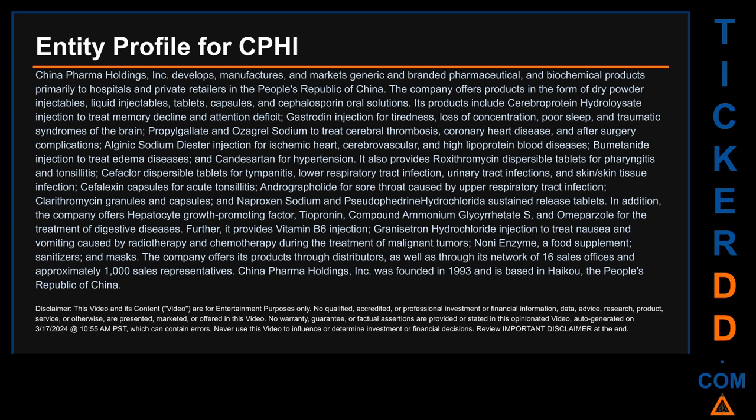It also provides Roxithromycin dispersible tablets for pharyngitis and tonsillitis; Cephalor dispersible tablets for tympanitis, lower respiratory tract infection, urinary tract infections, and skin tissue infection; Cephalexin capsules for acute tonsillitis; Andrographylide for sore throat caused by upper respiratory tract infection; Clarithromycin granules and capsules; Naproxen Sodium and Pseudoephedrine Hydrochloride sustained release tablets; Hepatocyte Growth Promoting Factor; Teopronin; Compound Ammonium Glycerrhotate S; and Omeprazole for digestive diseases; as well as Vitamin B6 injection, Granisetron Hydrochloride injection to treat nausea and vomiting caused by radiotherapy and chemotherapy during malignant tumor treatment; Noni enzyme, a food supplement; and sanitizers and masks. The company offers its products through distributors as well as through its network of 16 sales offices and approximately 1,000 sales representatives.